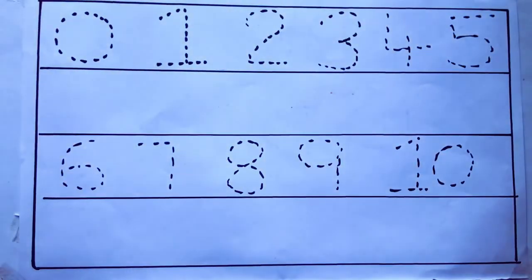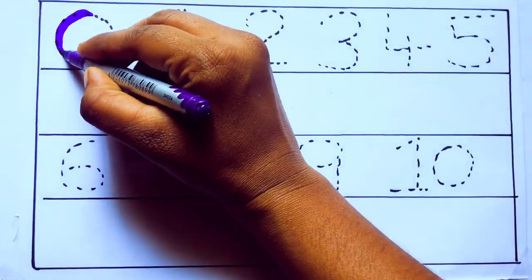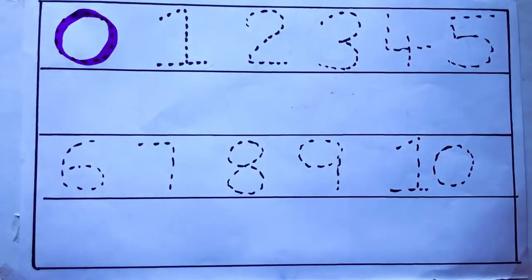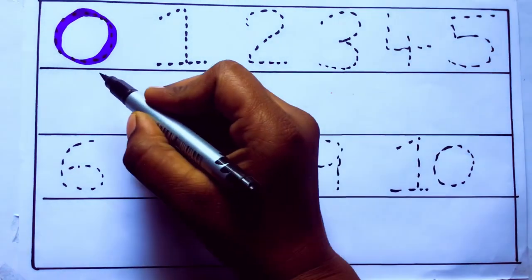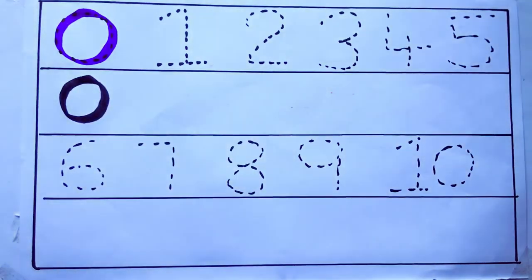Let's draw numbers. Violet color 0, Z-E-R-O. Violet color 0, 0, 0, 0.